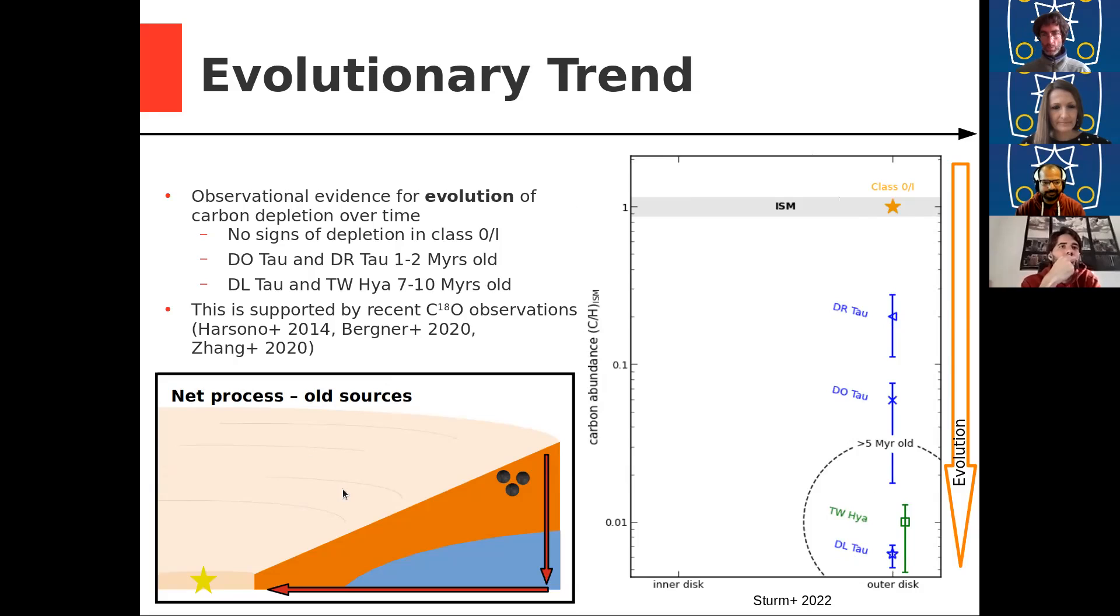And this is mainly a temperature effect. So in these old sources, we get that carbon is frozen out on dust grains and moved to the inner disk. But if you have younger sources, we get a lot of UV irradiation and the disks are in general much warmer. So the region where CO can freeze out is much smaller. So over time, you increase the region where CO can freeze out and you increase also the level of carbon depletion.